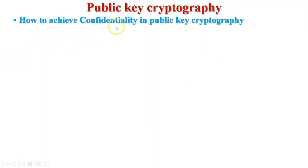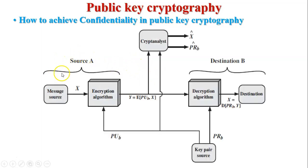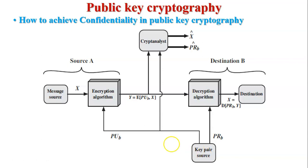Now, how to achieve confidentiality in public key cryptography. See this figure — this is the sender (source A) and this is the receiver (destination B). X is the original plaintext message that will be sent by the sender to the receiver. Before sending, an encryption algorithm is used to generate ciphertext. The input to the encryption algorithm is the original plaintext message and the public key of B (PUb). The key pair is generated at the destination side; the public key of the receiver is shared with the sender and the private key remains secret. So Y = E(PUb, X) — X is encrypted using the public key of B, generating ciphertext Y.